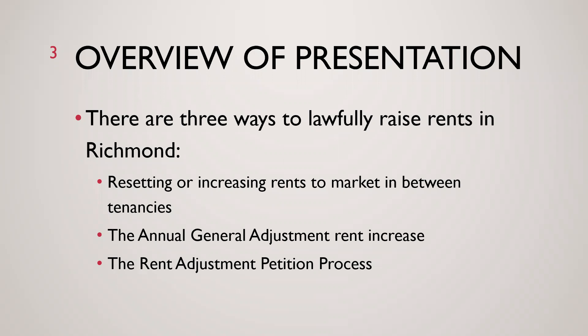There are three ways to lawfully raise rents in Richmond. The first is through the resetting of rents to market in between tenancies. The second is through the annual cost of living increase known as the Annual General Adjustment. The final way to raise rents is through the rent adjustment petition process, which allows landlords to petition to increase the rent to maintain the net operating income they achieved in the base year, or prior to rent control being considered as a policy. Landlords may also petition to increase rents due to an increase in occupants or an increase in space or services upon the agreement of the tenant.